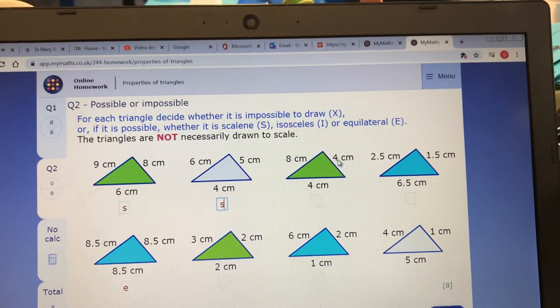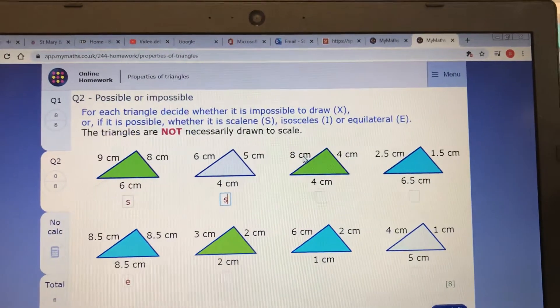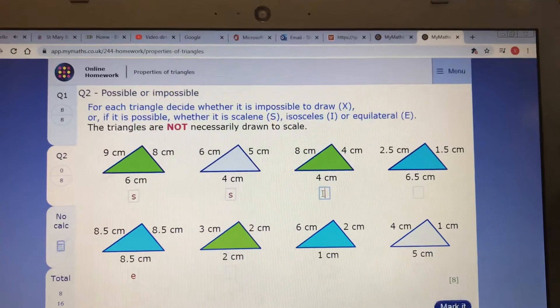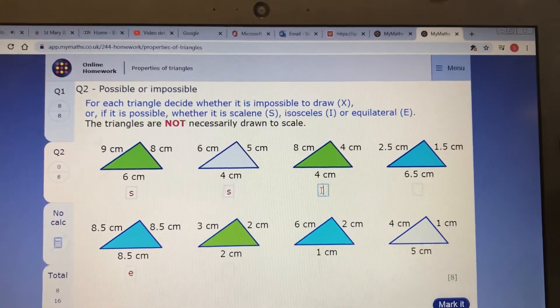Four and four are eight. Doesn't add up to more than eight, does it? So it can't be a proper triangle because the two shorter sides don't add up to more than the longest side, so that's an X.